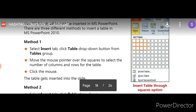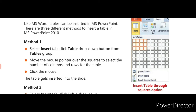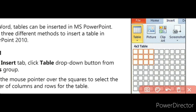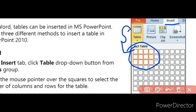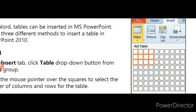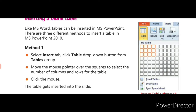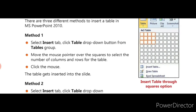See this diagram — Insert Table through squares option. First, select the Insert tab. After clicking the Insert tab, the Table drop-down button will be displayed. Click on the Table drop-down button from the Tables group. Then move the mouse pointer over the squares to select how many rows and columns you need, and click the mouse.